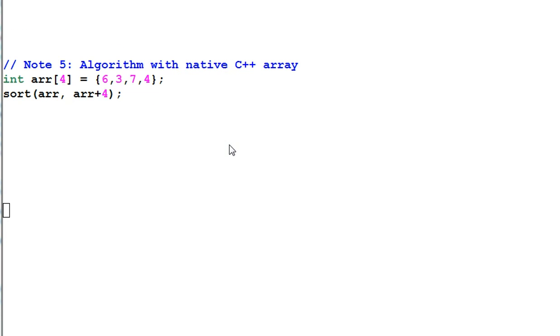Note 5. Algorithms can even work with native C++ array. Here I have array of 6, 3, 7, 4. And I can use the sort function to sort the array. Sort array array plus 4. This can work because a pointer can be thought of as an iterator. Iterator is a pure abstract concept. Anything behave like iterator is an iterator. And in this case, a pointer is an iterator.